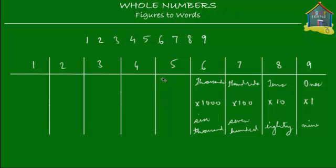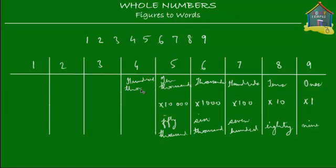Then comes 5, and 5 is in the 10,000s place. That means you multiply 5 by 10,000 — a 10 followed by three zeros — and 5 times 10,000 is 50,000. Next is 4, and 4 is in the 100,000s place, because after 10,000 comes 100,000. So 4 times 100,000 is 400,000.